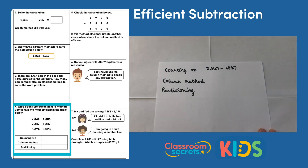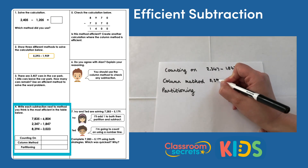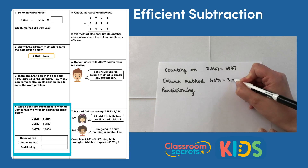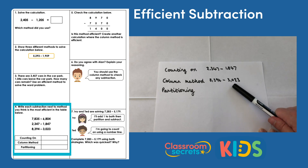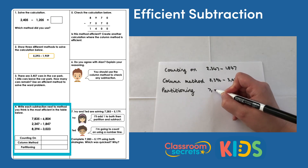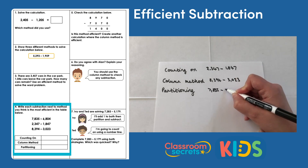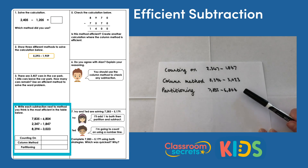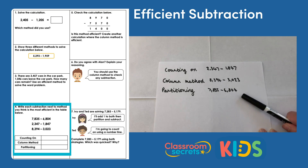For column method and partitioning, you might have different answers — that's fine. The important thing is to explain what you've chosen and why. For the column method, I'd use 8,394 subtract 3,023, because the difference is quite big. For partitioning, I'd use 7,835 subtract 6,804, because there are no exchanges needed and the difference is small enough to partition mentally.